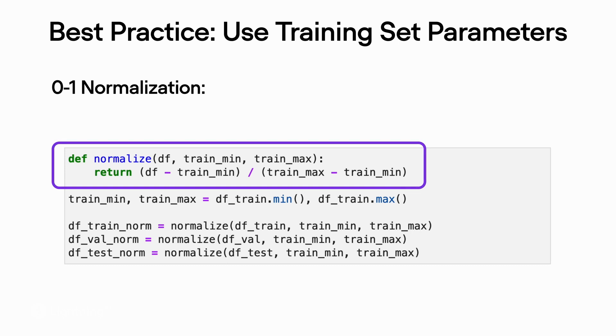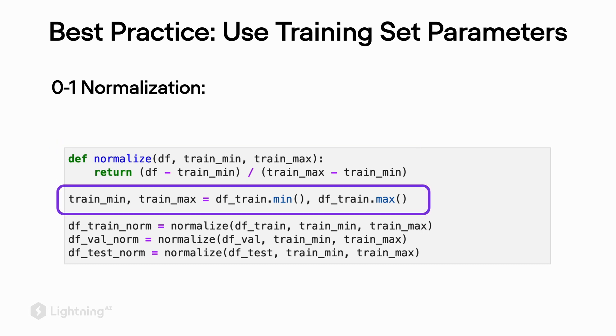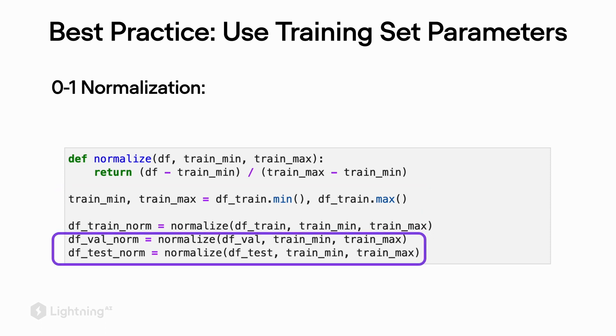So here's how it looks in code. We have this normalization function that will normalize the data for us, and we have to provide it with the minimum and the maximum of the training set. Once we computed the minimum and the maximum of each feature column, we can then use that to also scale the validation and the test sets.